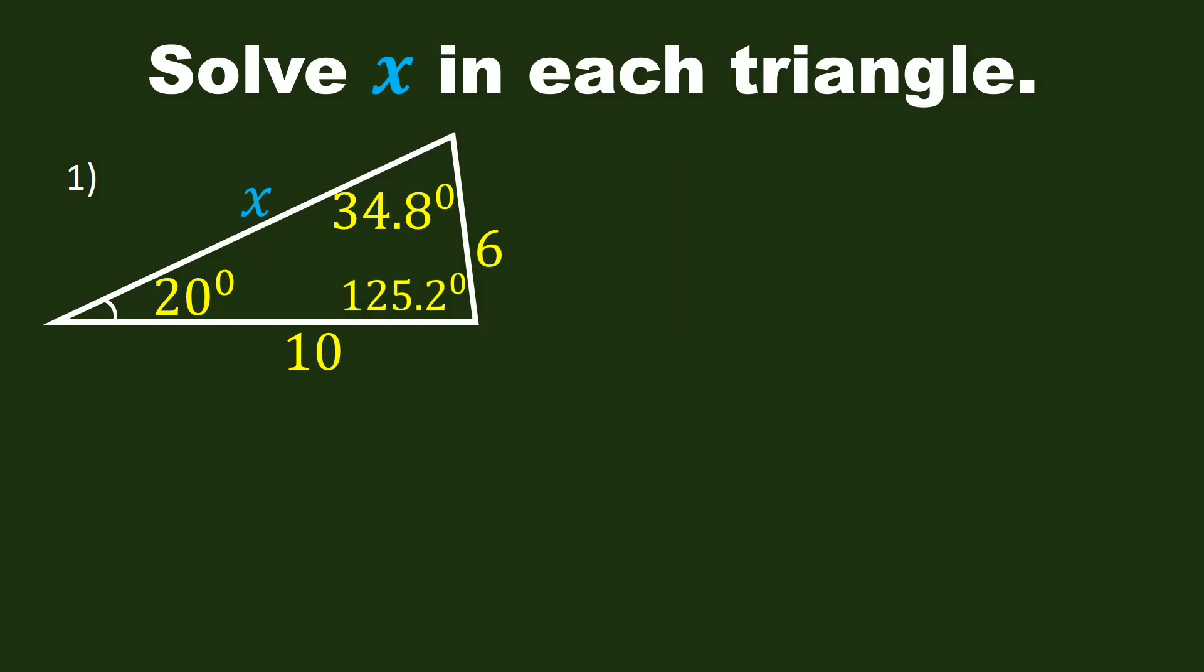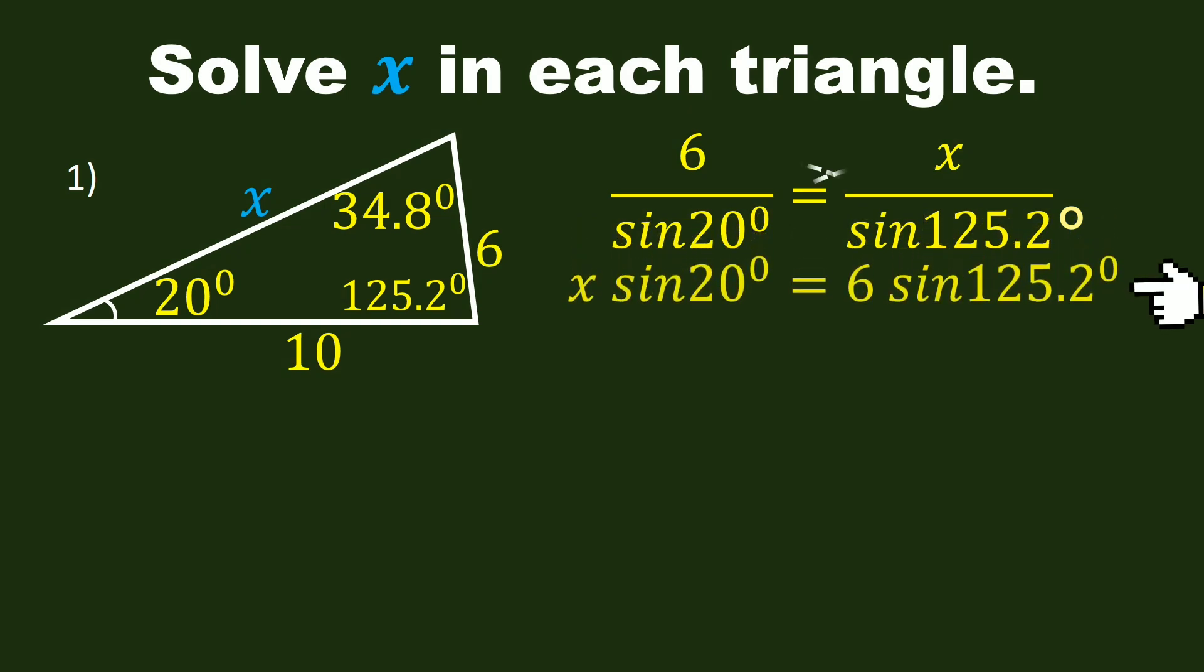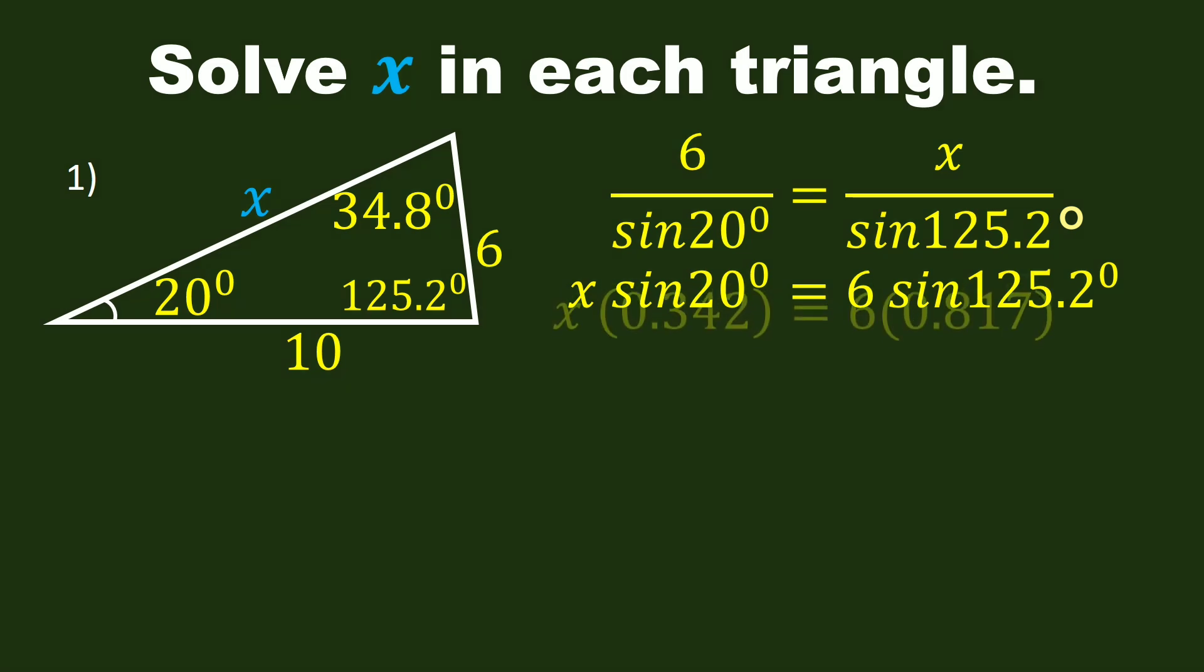We can now find the value of X by using the law of sines. We have 6 over sine 20 degrees is equal to X over sine 125.2 degrees. By cross-multiplying, we have X sine 20 degrees is equal to 6 sine 125.2 degrees. Sine 20 degrees is 0.342, and sine 125.2 degrees is 0.817.